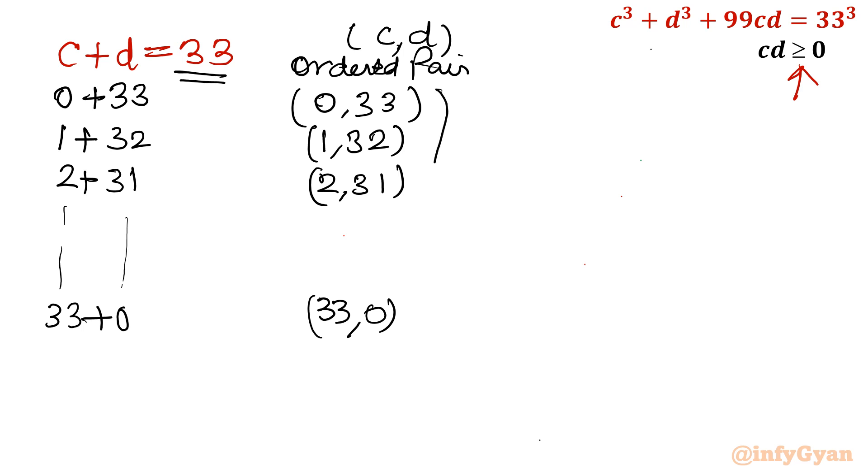How many ordered pairs are there? Total 0, 1, 2, 33 and 0 is extra. So total 34 ordered pairs. 34 ordered pairs are there.